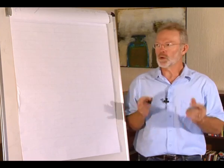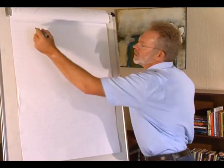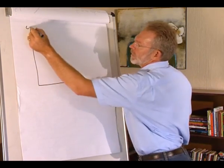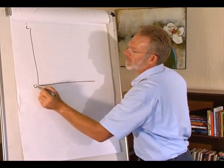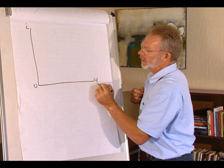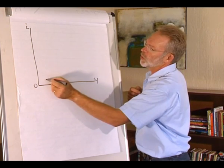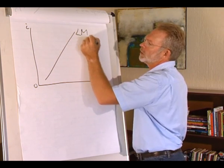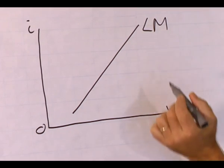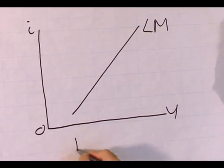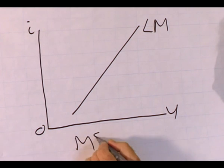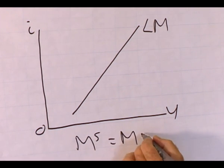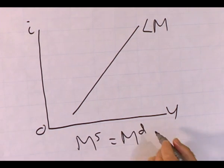The LM curve shows all the combinations of interest rate and level of production where the financial market is in equilibrium. The financial market is in equilibrium where the supply of money is equal to the demand for money.